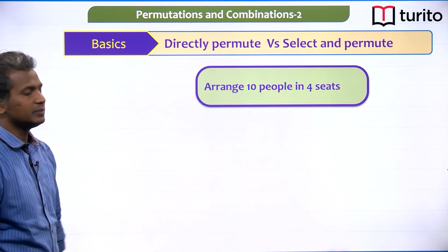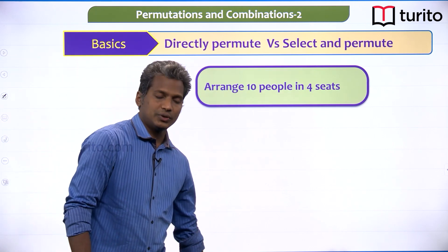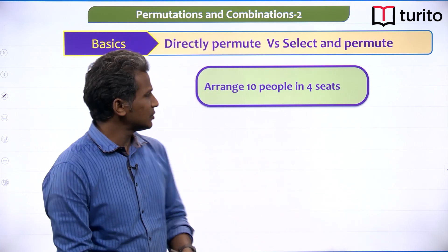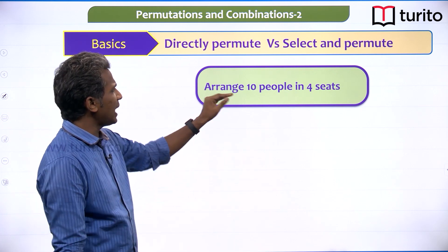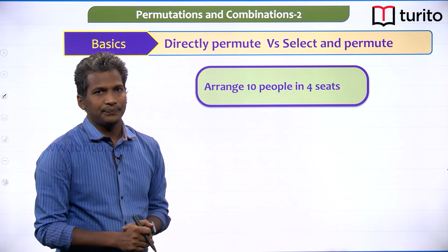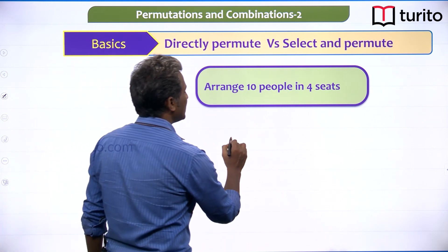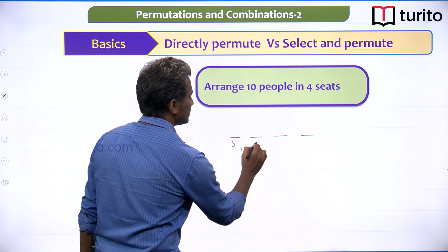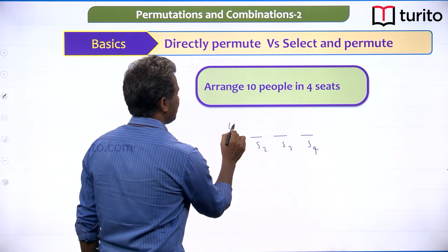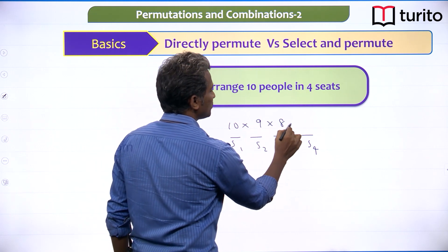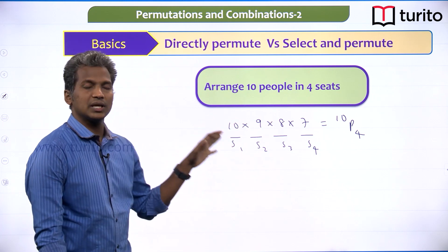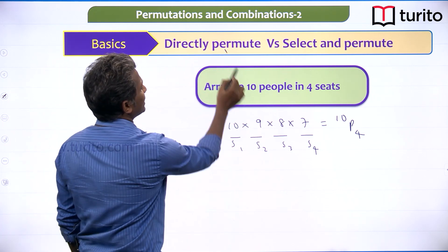Now let us discuss two methods: directly permuting and select-and-permute. The question is arranging 10 people in 4 seats. For the directly permute method: seat 1 has 10 options, seat 2 has 9, seat 3 has 8, seat 4 has 7. Total is 10P4. This is the directly permute technique.